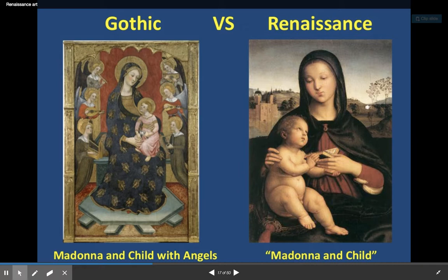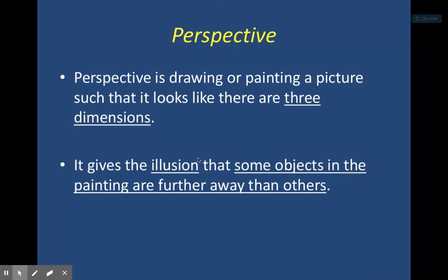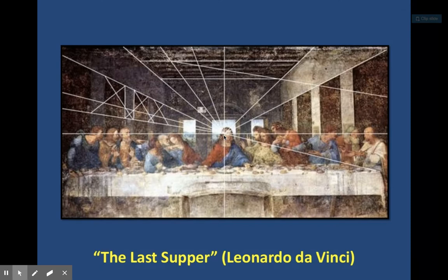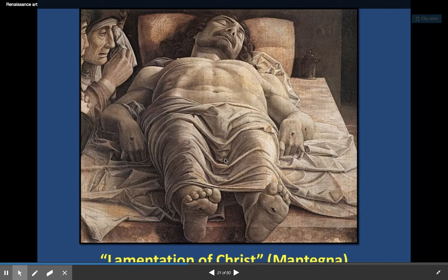Medieval art is more flat and unrealistic — angels stacked on top of each other. Perspective is the drawing of pictures that look three-dimensional; the further a character is, the smaller they tend to get. This dot is called the vanishing point. This Renaissance example is much more realistic — you can see the rib cage, the neck, the expression. It's not a flat picture; you can tell the head is on that side, the feet on this side, even the crevices.